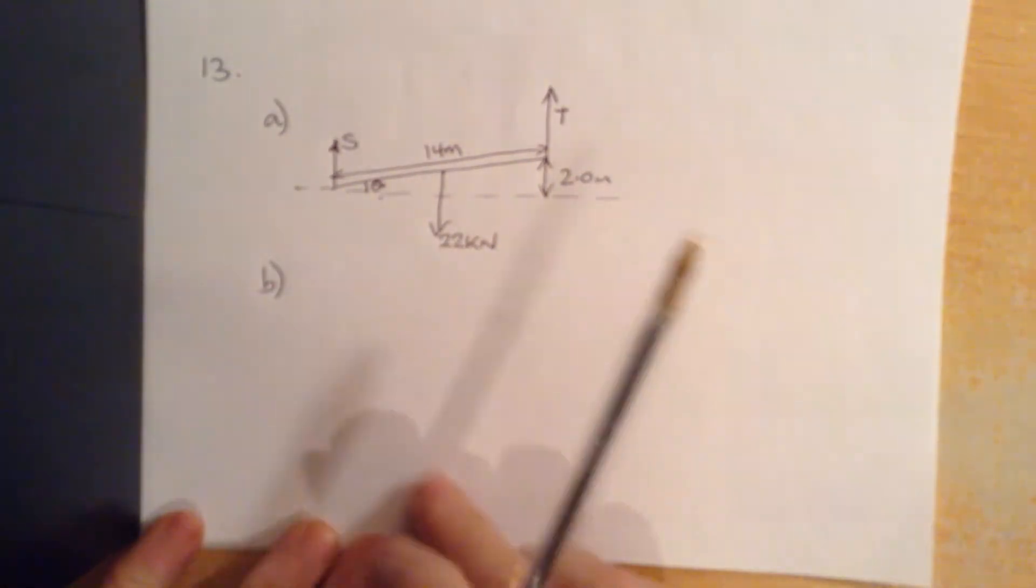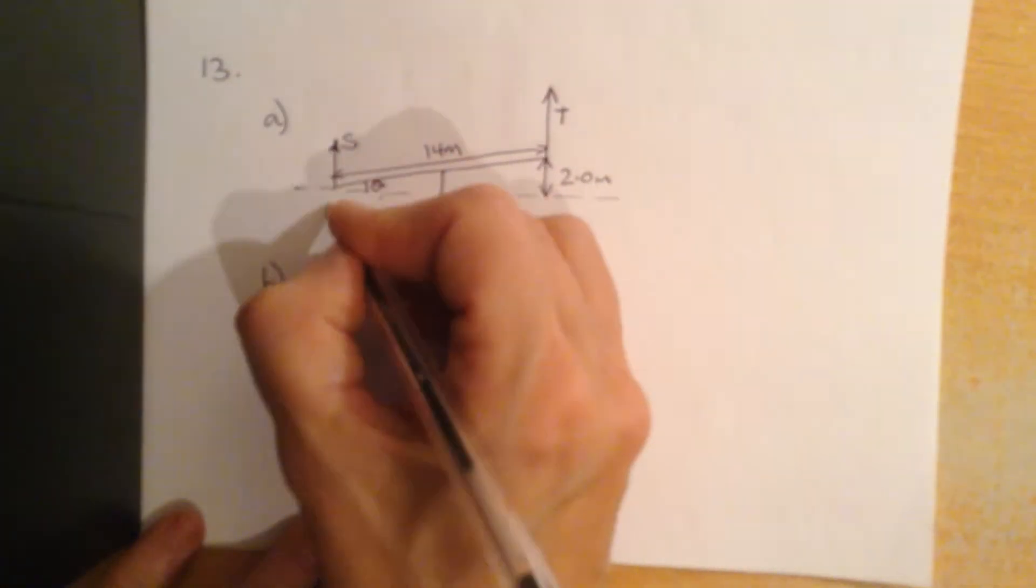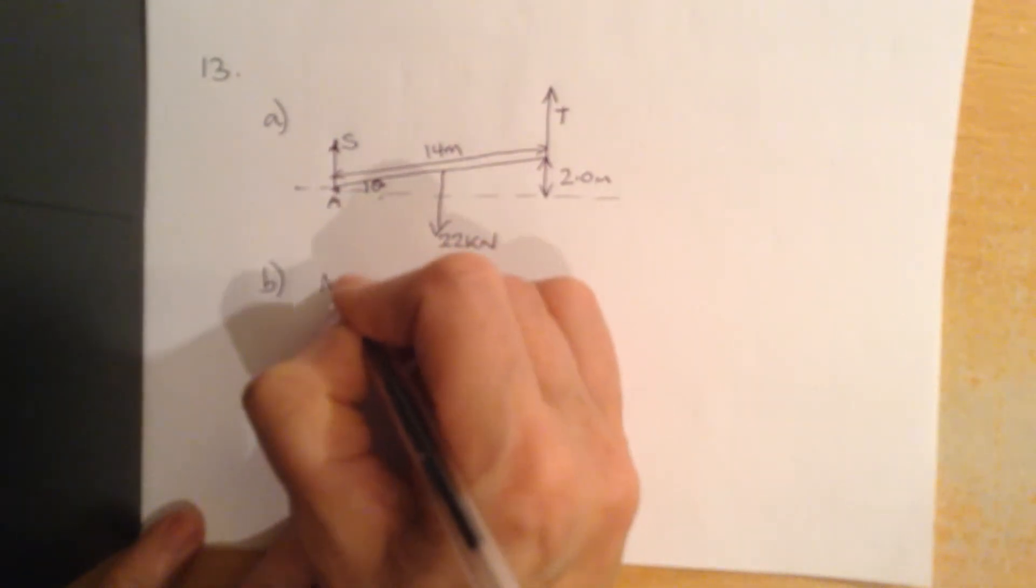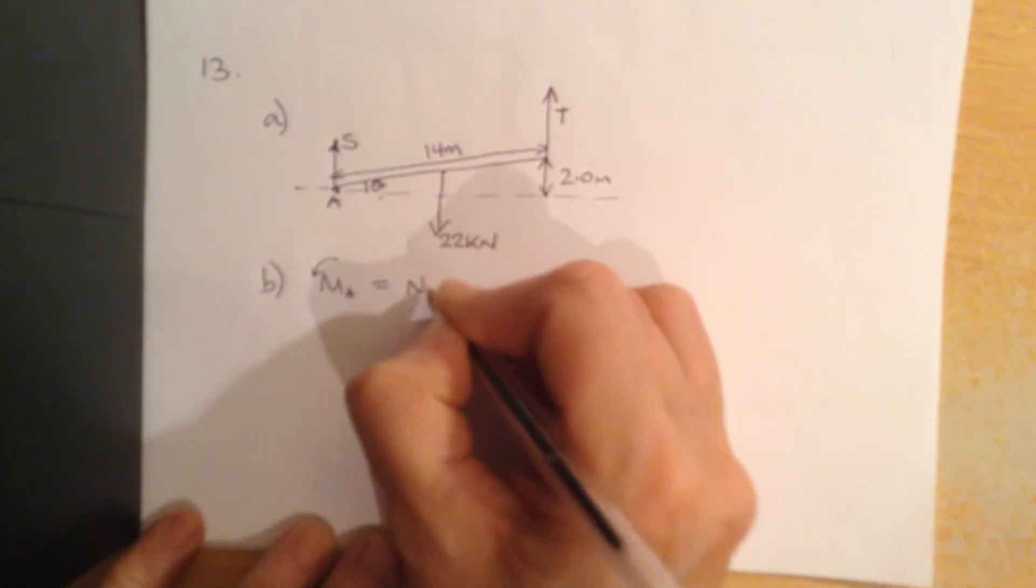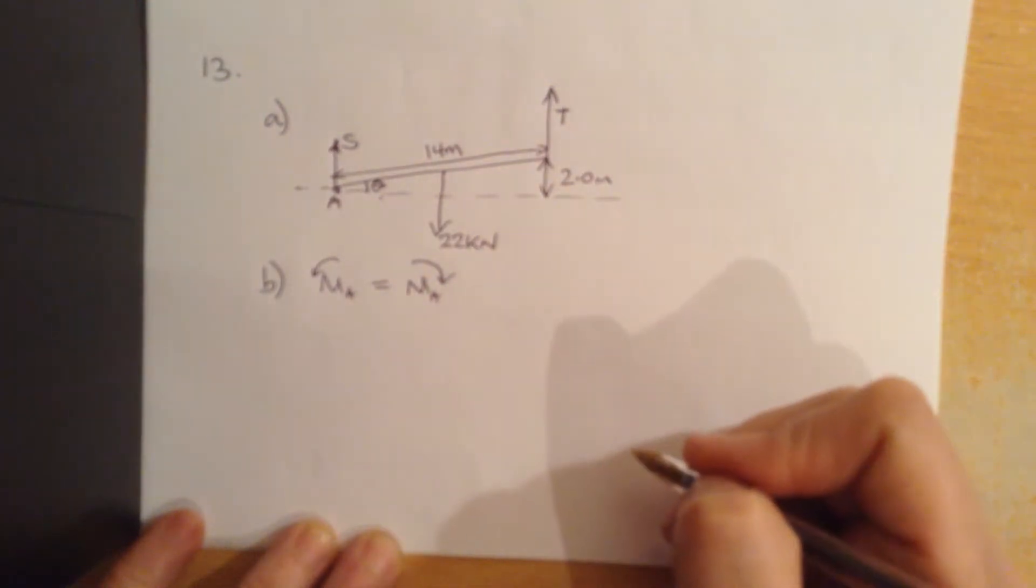So what I'm going to do, I've got two unknowns, I'm going to take moments around one of these points, let's call this one here A. So take moments about A, but anti-clockwise, they're going to match and balance the clockwise moments.